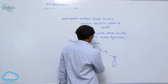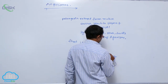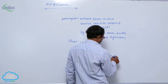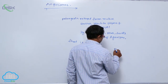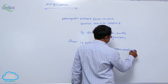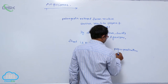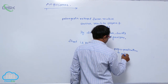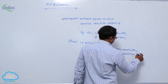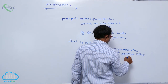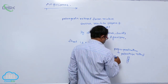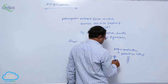Pollination takes place by various factors. After the pollen grains fall on the stigma, that is known as pollen germination. By pollen germination, a pollen tube is formed. This pollen tube carries the male gametes and grows through the style.